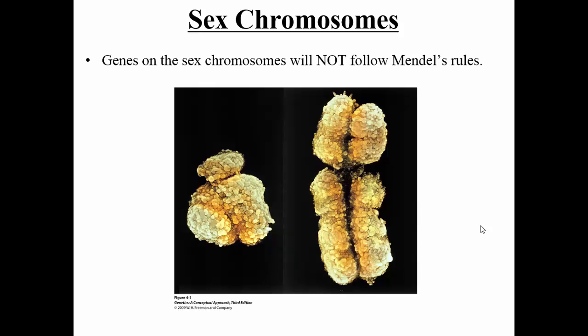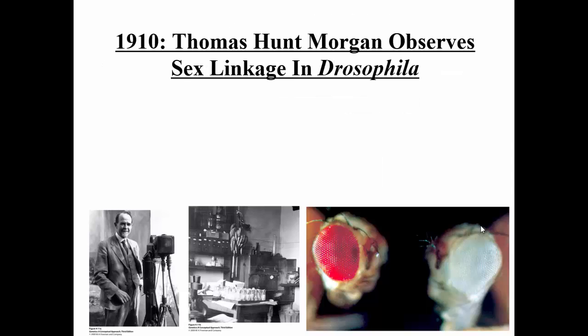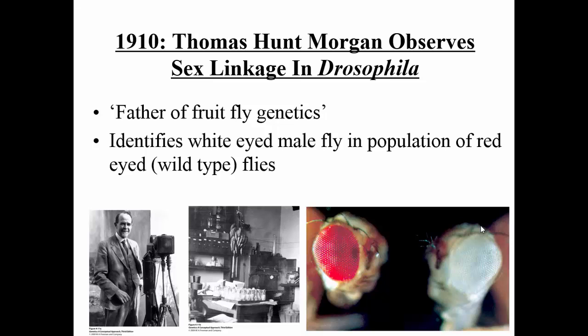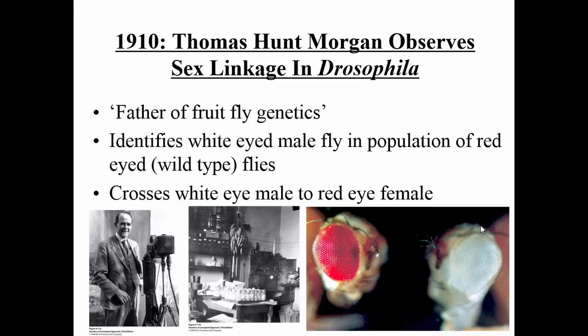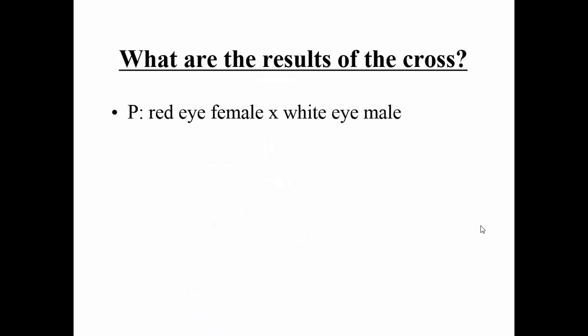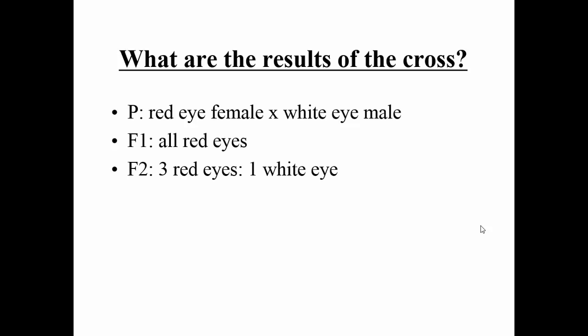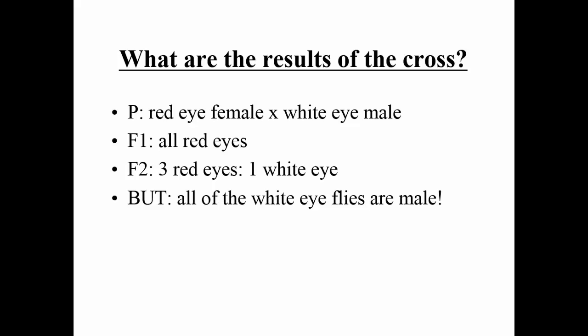Sex chromosomes don't follow Mendel's rules for inheritance. In 1910, Thomas Hunt Morgan discovered sex linkage in fruit flies, earning him the title of father of fruit fly genetics. He observed a white-eyed male in a population of red-eyed flies. He crossed a red-eyed wild female with a white-eyed male, and all F1 offspring were wild-type. The F2 phenotypic ratio was three red to one white, but all the white-eyed flies were male — something Mendel would not have expected.